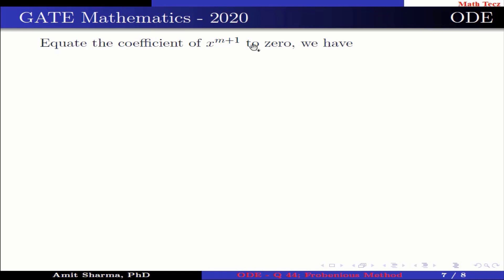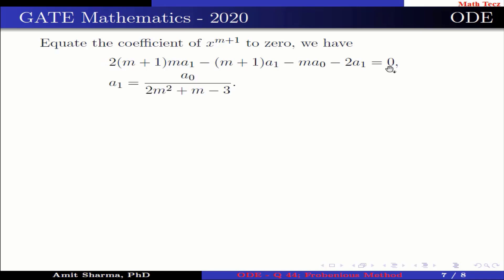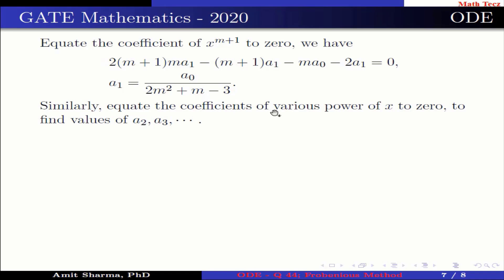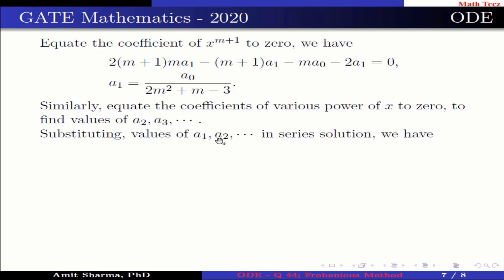Equating the coefficient of x^(m+1) to zero, we get 2(m+1)m·a₁ − (m+1)·a₀ − 2a₁ = 0, which implies a₁ = a₀ / (2m² + m − 3). Similarly, equating the coefficients of various powers of x to zero gives the values of a₂, a₃, and so on. Substituting these into the series solution gives y = x^m [a₀ + a₀x/(2m² + m − 3) + …].